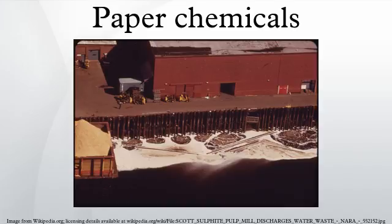Paper chemicals designate a group of chemicals that modify the properties of paper. These chemicals can be used to alter the paper in many ways, including changing its color and brightness, or by increasing its strength and resistance to water.